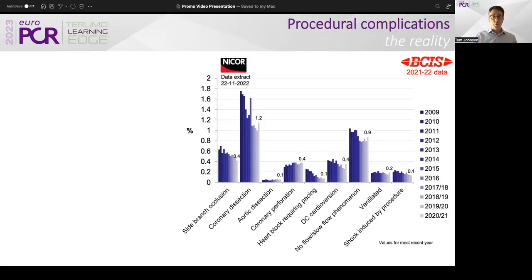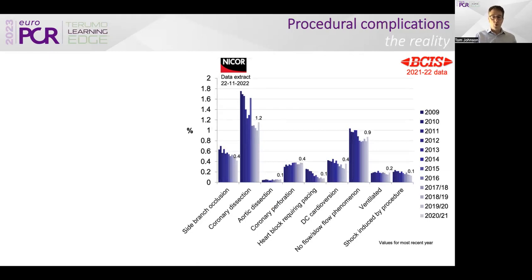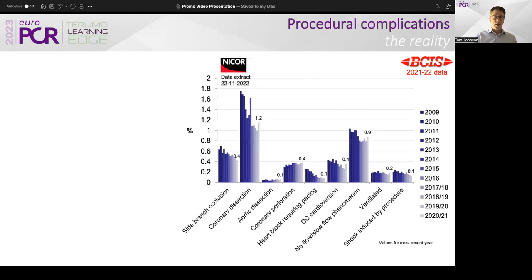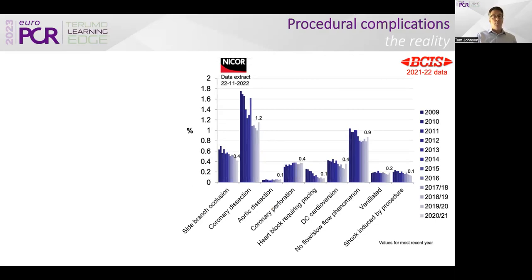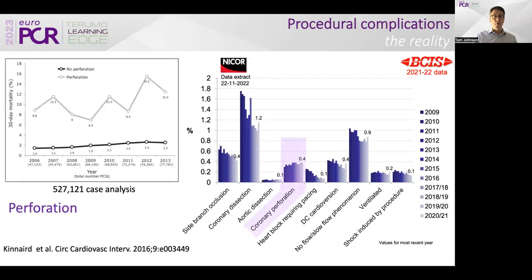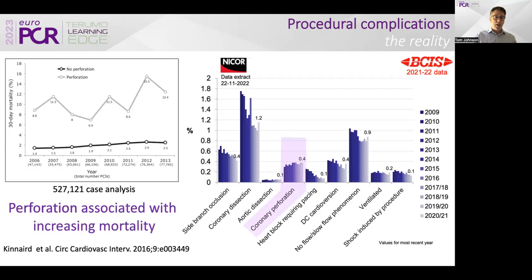Moving from device to procedural complications, data from the UK BCIS audit highlights that coronary dissection is by far the commonest occurrence, followed by slow flow/no flow seen most commonly with acute coronary syndrome. Coronary perforation does occur on a fairly regular basis, and analysis by Tim Kennedy working with the BCIS audit highlights an increasing mortality associated with perforation. The increasing complexity of the work we're undertaking means that perforation is something we're more likely to encounter.